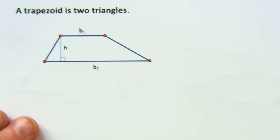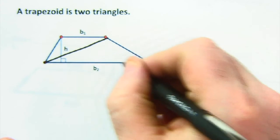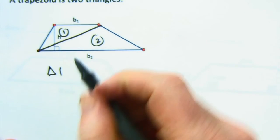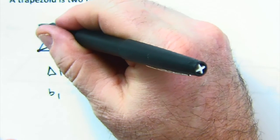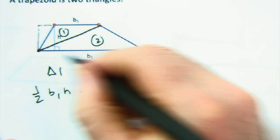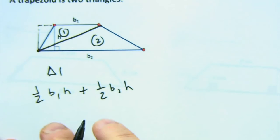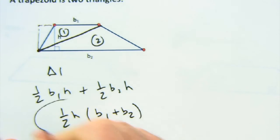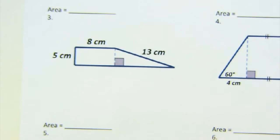Let me do one more dissection — seeing the trapezoid as two triangles. One triangle has base b1 and height h, giving one half·b1·h. The other triangle has base b2 and the same height h, giving one half·b2·h. Adding them together: factor out one half·h and you're left with (b1 + b2). That's even easier than the last one — there's the relationship again.